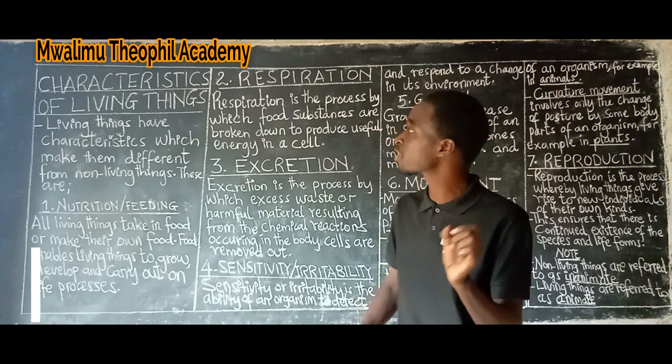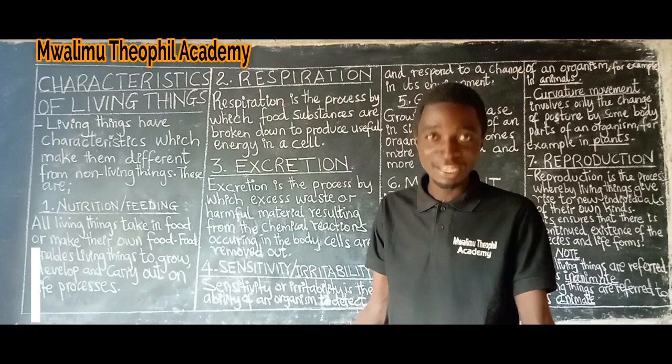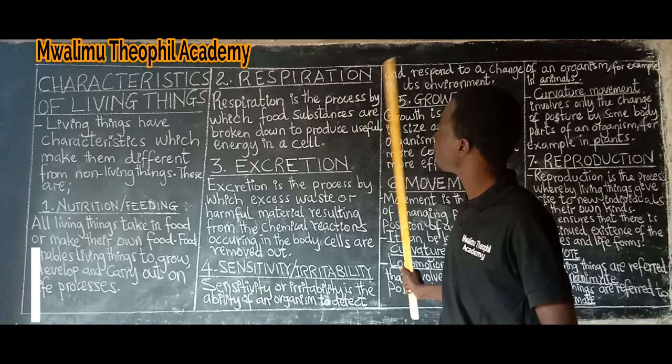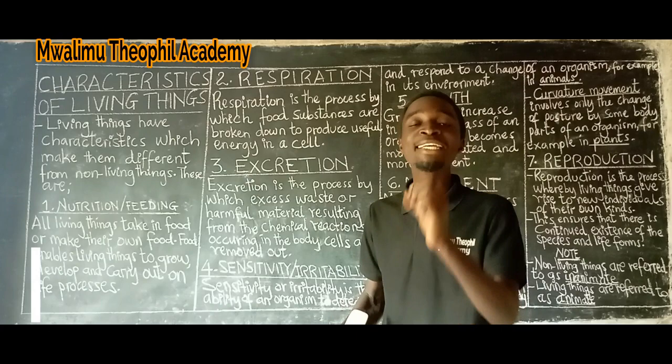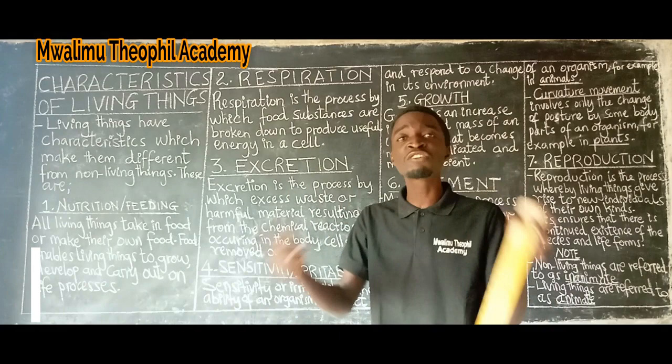The second characteristic of living things is respiration. Respiration is the process by which food substances are broken down to produce useful energy in a cell. Respiration is therefore essential for the health of a cell. All metabolic activities take place in the cell.